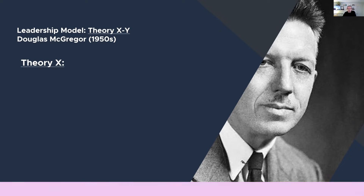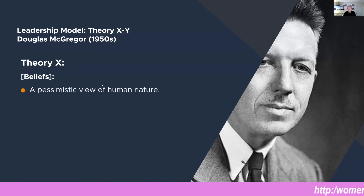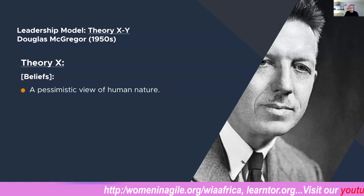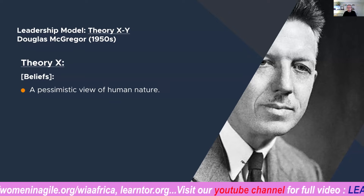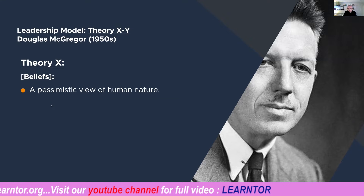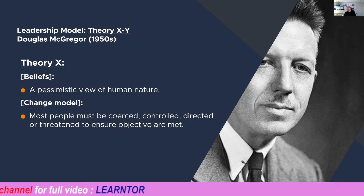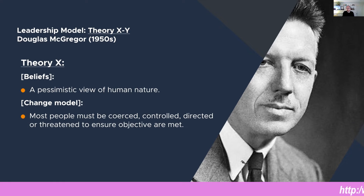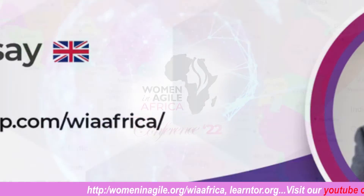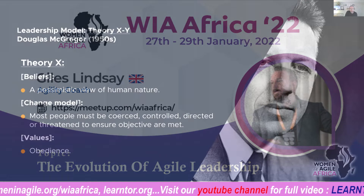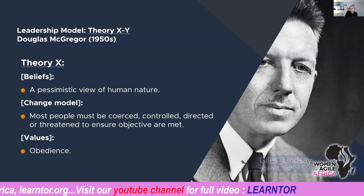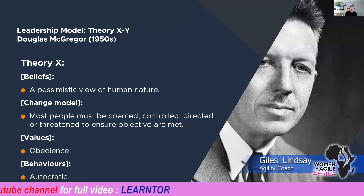Let's have a look at these attributes from Theory X. The belief is a pessimistic view of human nature. Its change model is that most people must be coerced, controlled, directed, or even threatened to ensure that objectives are met. This is not good at all. The values are obedience, and lastly, the behavior is autocratic.